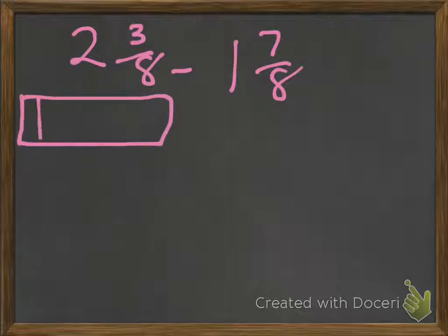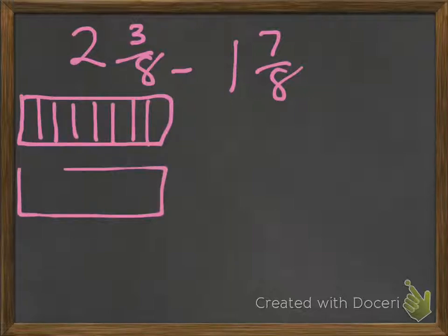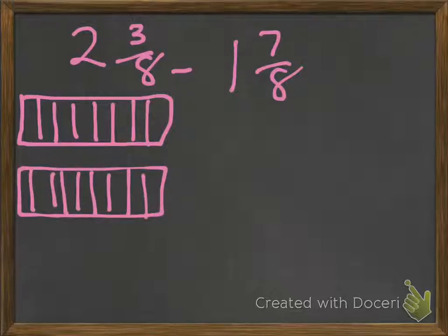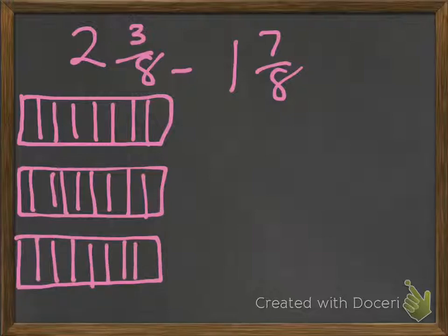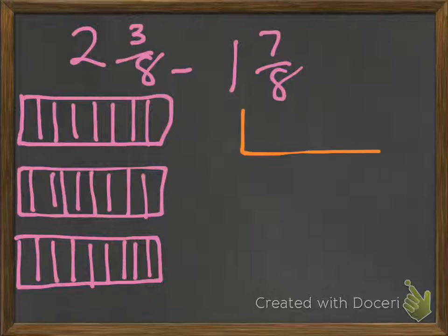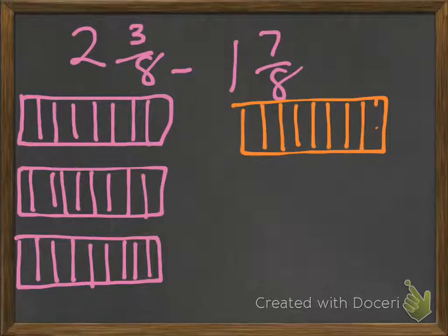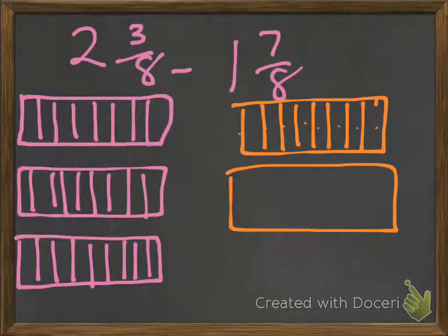We have 1, 2, 3, 4, 5, 6, 7, 8. And 1, 2, 3, 4, 5, 6, 7, 8. And another one, 1, 2, 3, 4, 5, 6, 7, 8. And then for over here, let's make it a different color so we can see it. We need a hole.